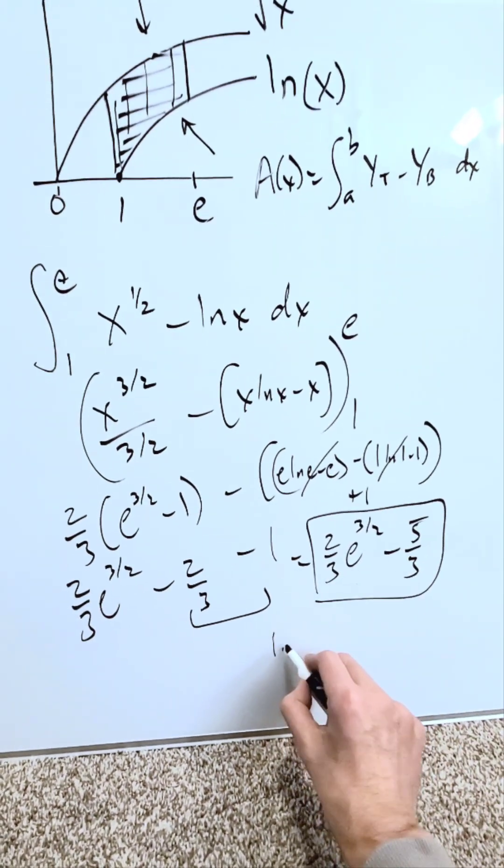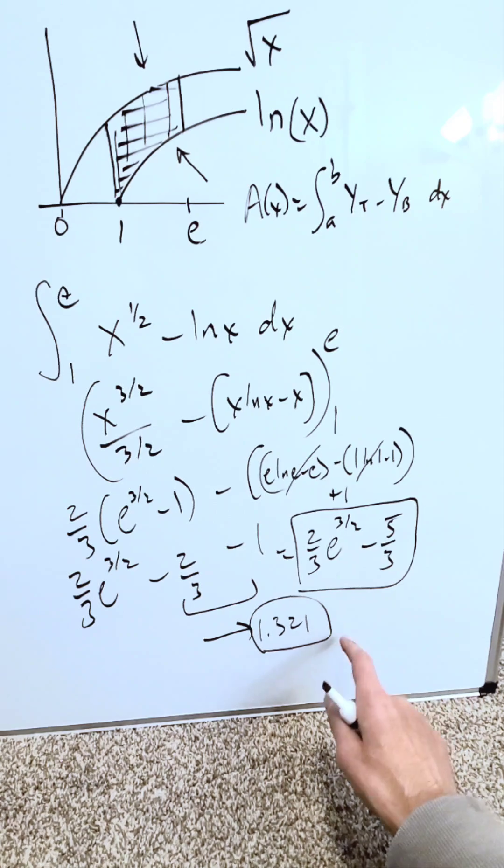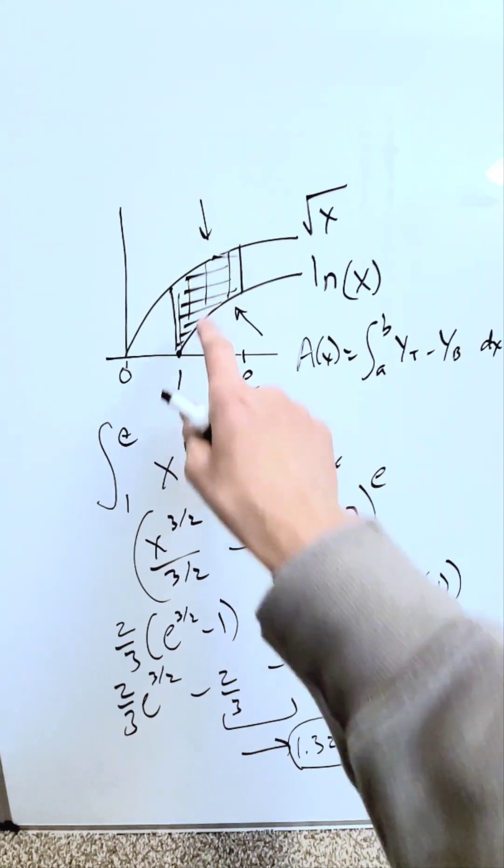If you want a value here, it's 1.321. Run this on your calculator, it'll be a value close to that. That will be the area represented over here.